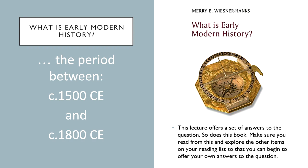Some historians date things a bit differently. Parts of the 15th century, for example, are sometimes included in the Early Modern. The Journal of Early Modern History pushes things back further still, publishing articles about the period between around 1300 and 1800. But that 1500 to 1800 range is still fairly broadly accepted as the parameters of Early Modern History.